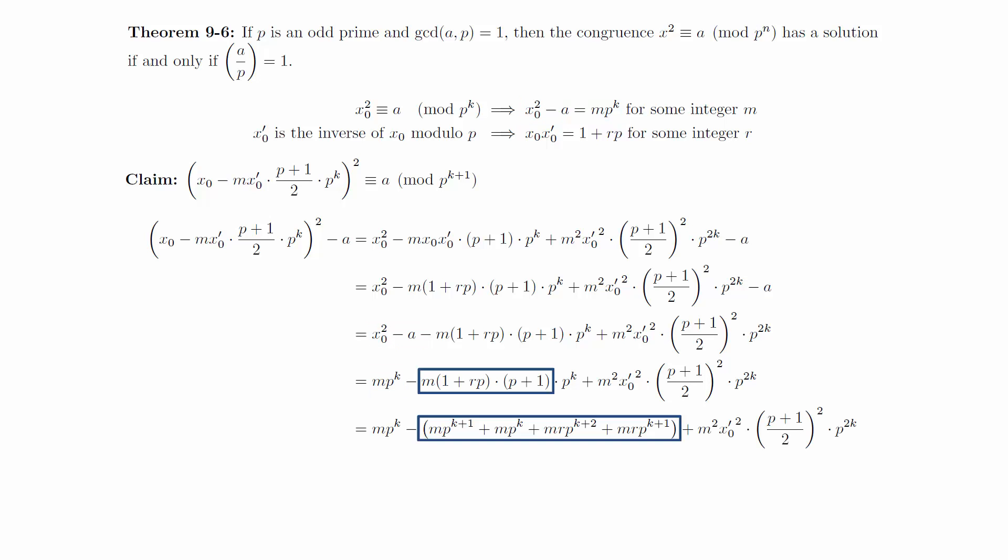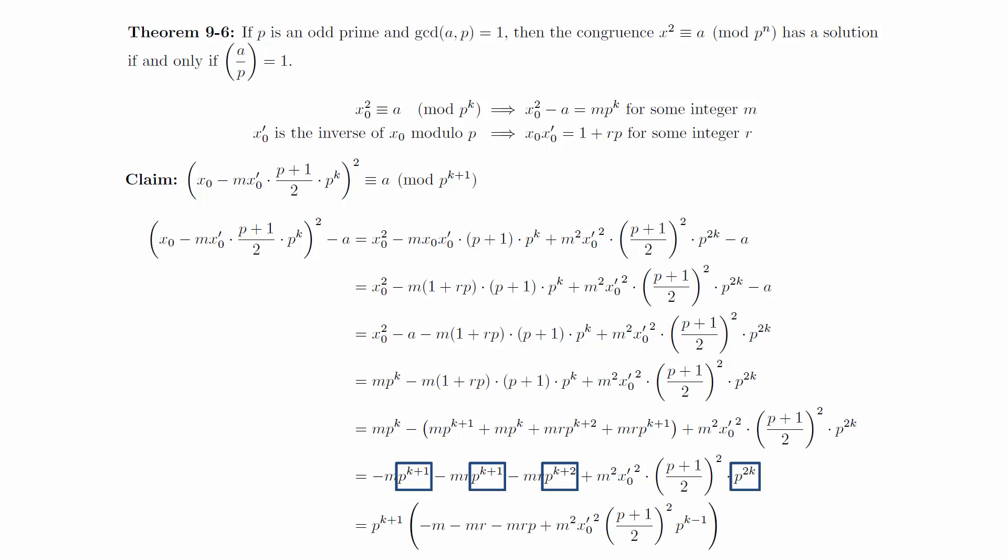Next, we expand out the middle term in order to get some cancellation. Notice that we can pull out a factor of p^(k+1) from the entire expression, which is what we were trying to accomplish.